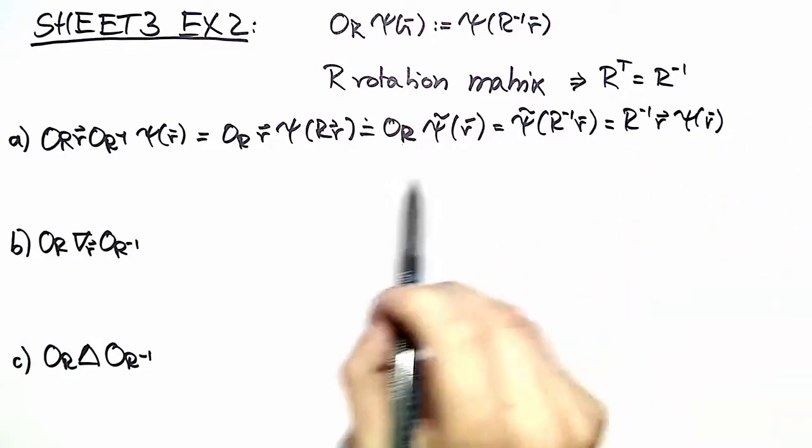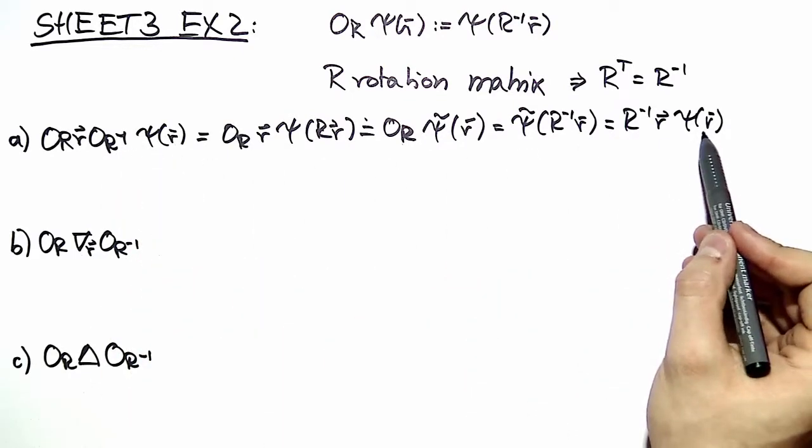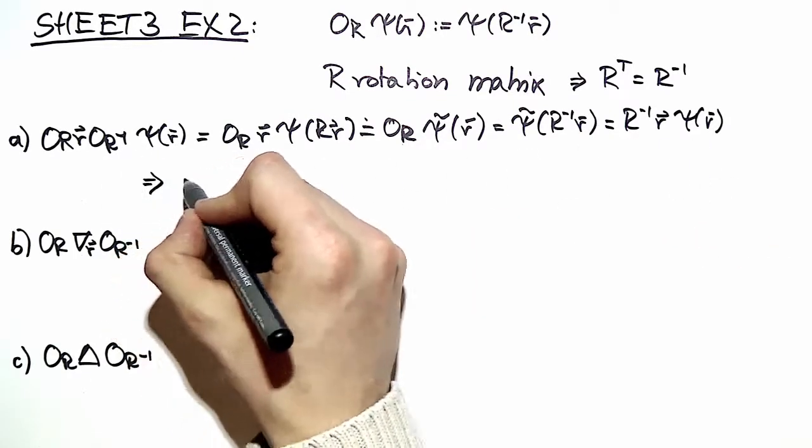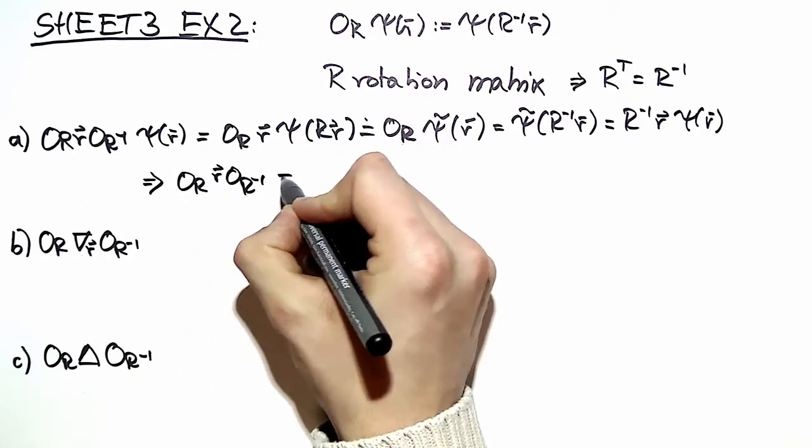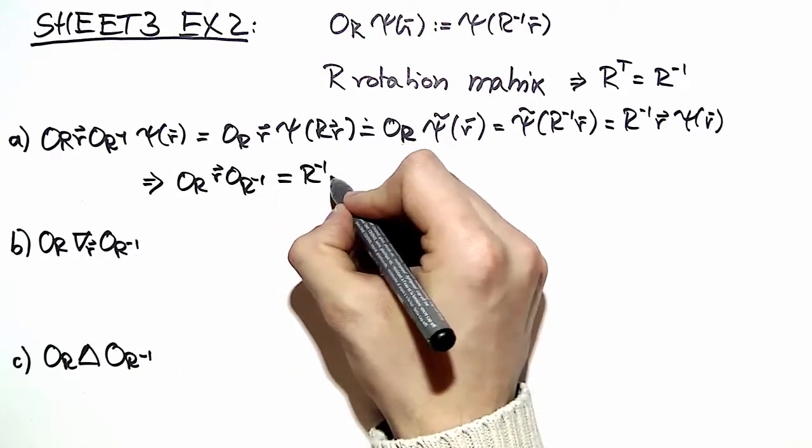Why is this our result? Because Psi of R and this Psi of R are just the same and we can neglect them and write our condition just like this.